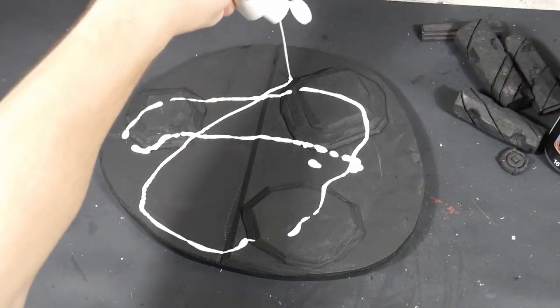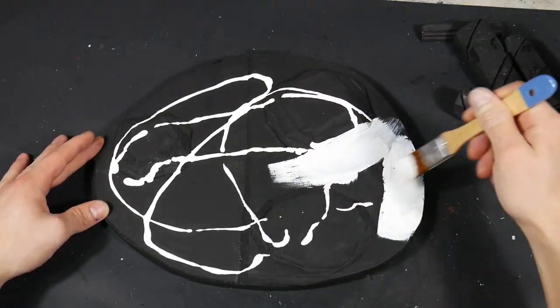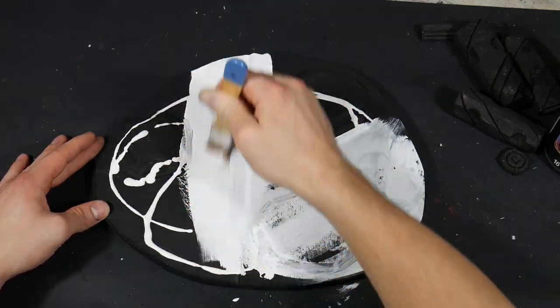Then we're going to be covering it with white. I'm going to be using Liquitex gel later on for the snow but I wanted to save myself a lot of Liquitex gel so I just covered the base of the diorama in white.